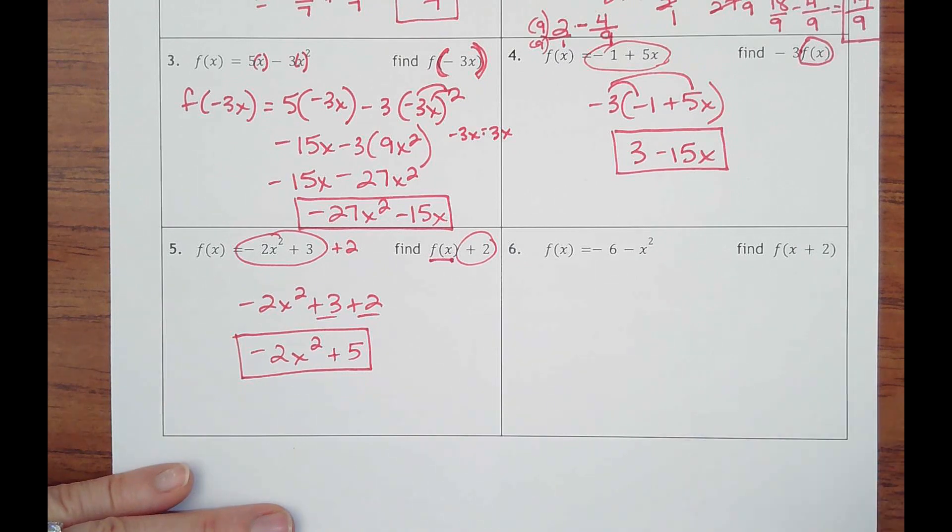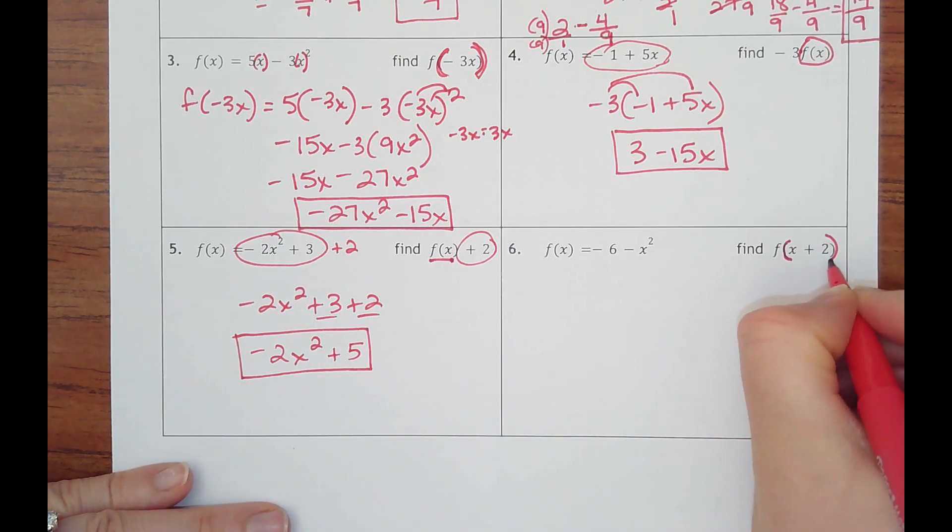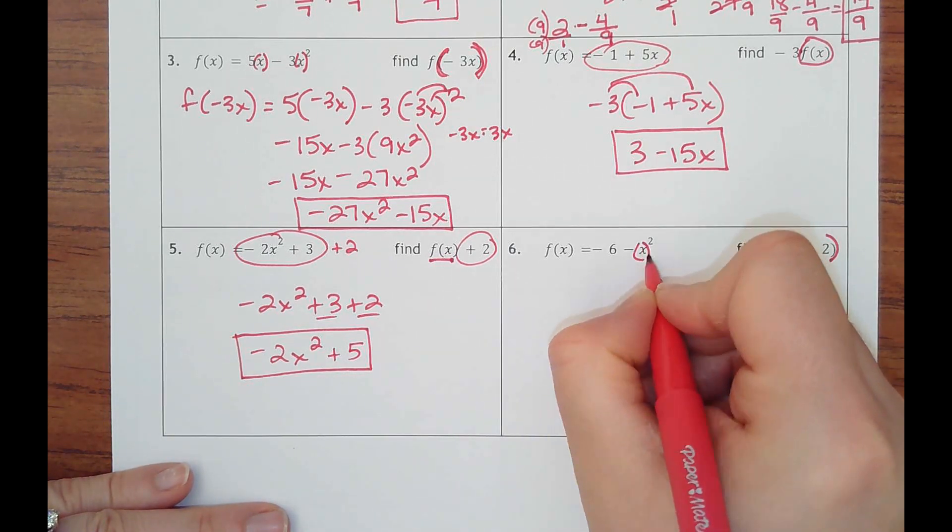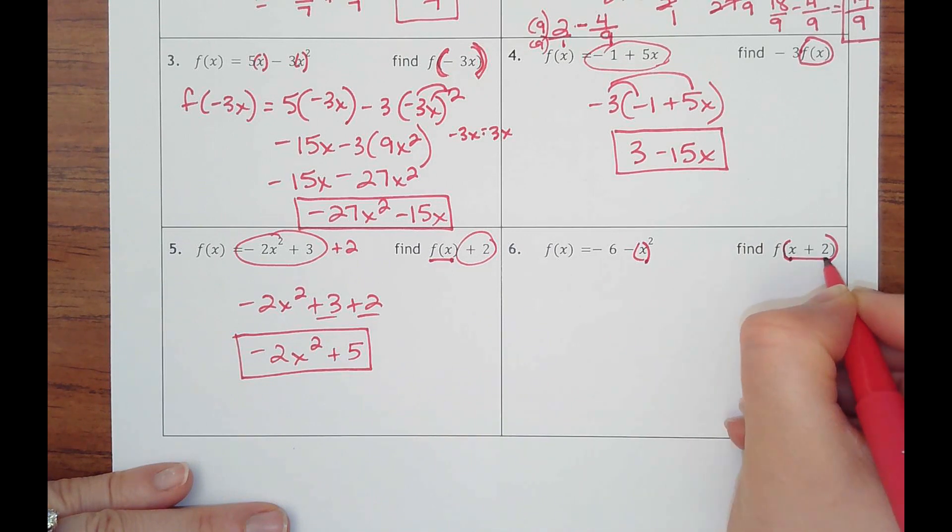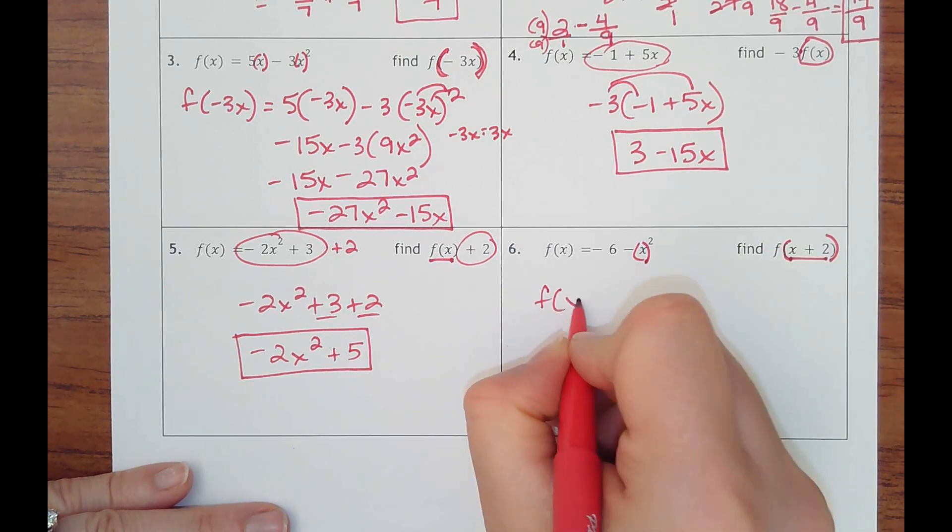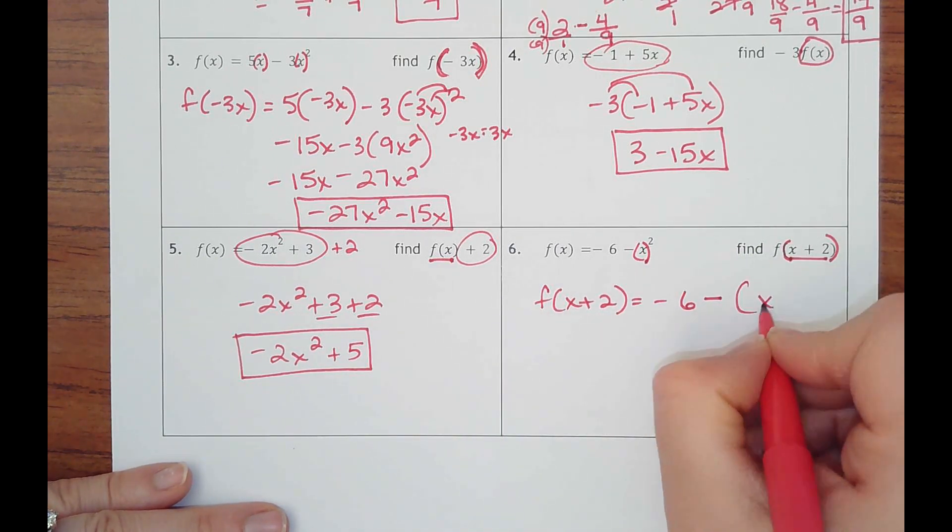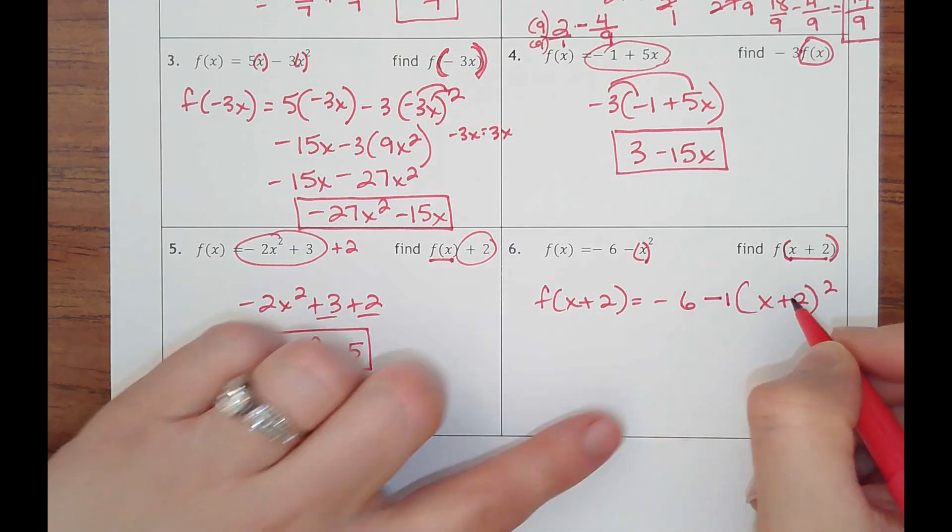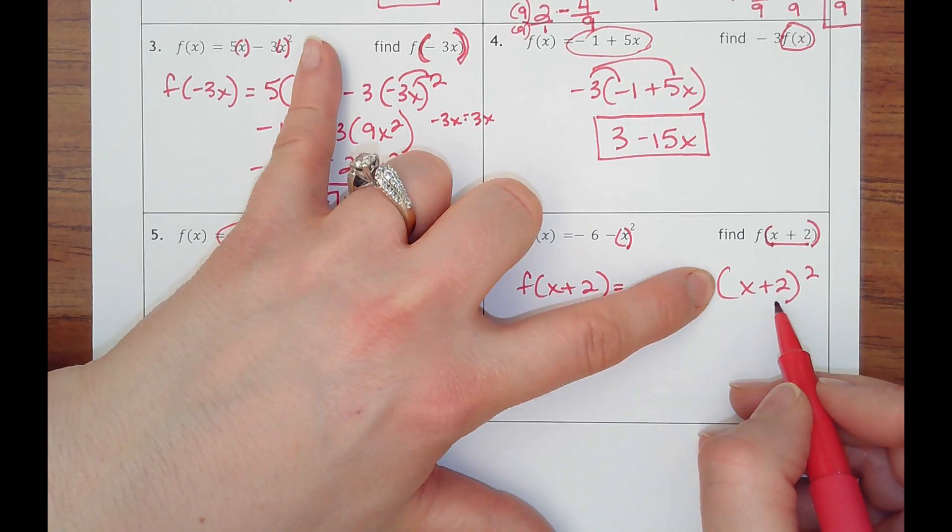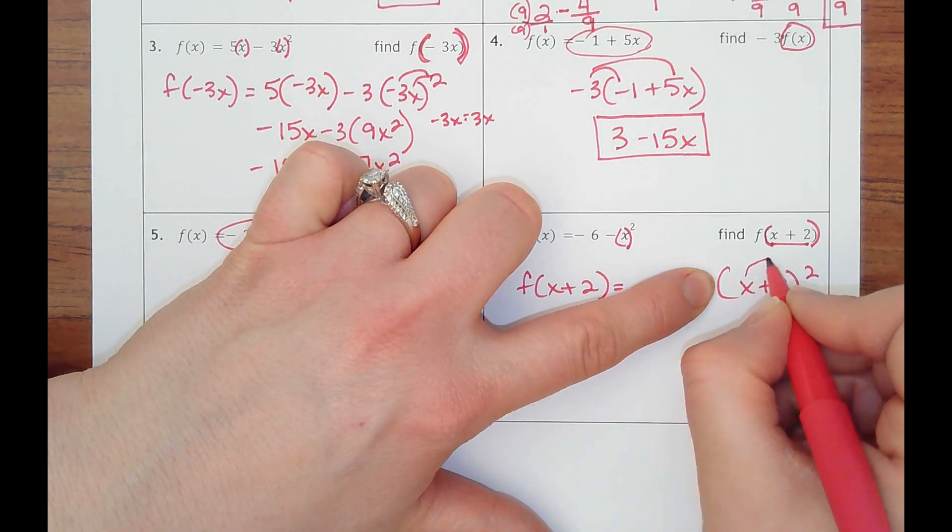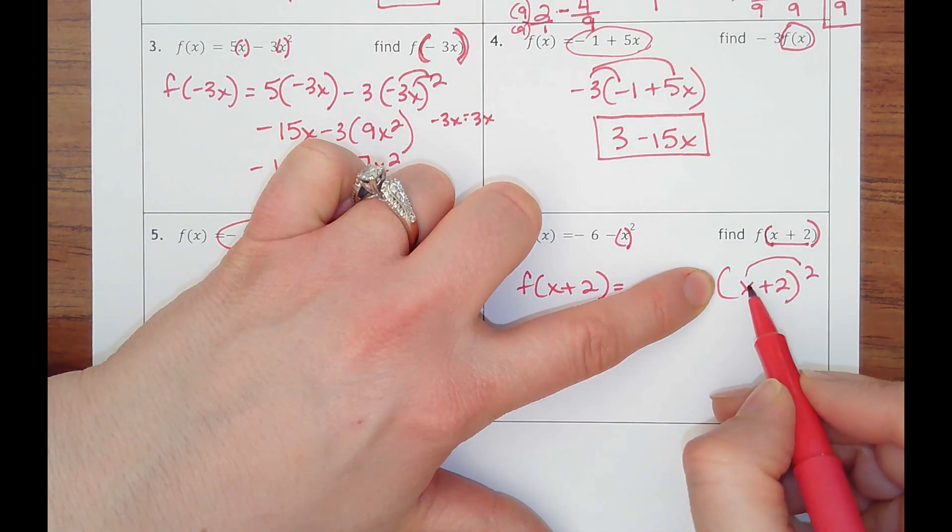And then the last one, this is inside with x. So right here, I'm going to have to put in x plus two, and I'll have to square it. Put your minus sign first, then your x plus two squared. This is like a negative one being multiplied, but make sure you're doing this first.